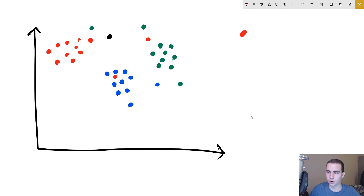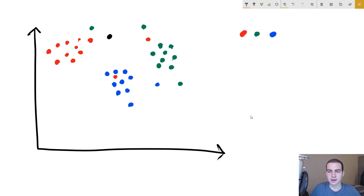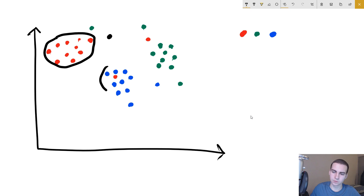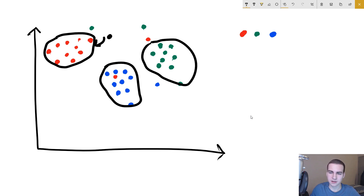In this case our three classes would be red, green, and blue. These would most likely represent something, but we'll just use colors because it's easy to see. The black point is our question mark — we don't know what class it is and we're trying to predict it. The way we predict this point is we look for groupings of data points. We see a group of red, a group of blue, a group of green, and you would probably say this black point belongs to red or blue — it's closest to red, and that is exactly what our algorithm does.